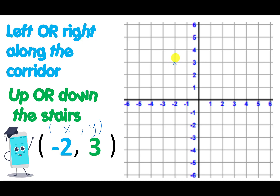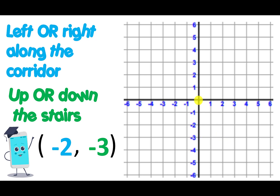Let's have a look at the same digits in a different order. This time I have two — it's a positive two, so I'm going to go along to two. Then it's a negative three, so I'm going to go down three. So I'm at two, negative three. Finally, let's have a look at what happens when they're both negative numbers. I go to negative two, which is back, and I go down to negative three. And there we have all our examples for the quadrants. Two, three — from earlier in the video — is along two and up three.